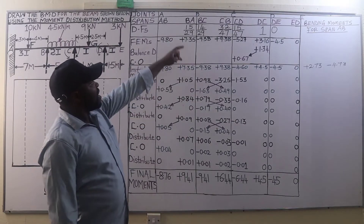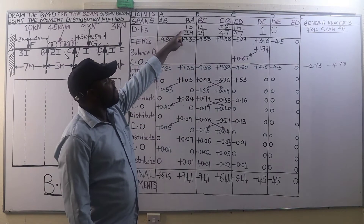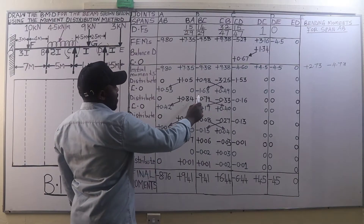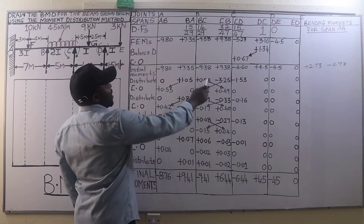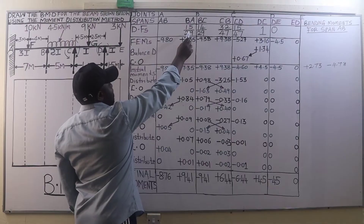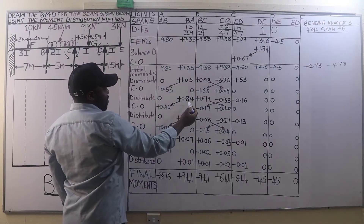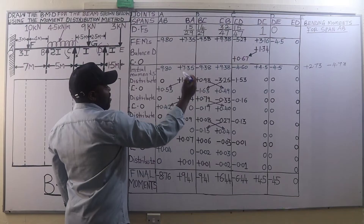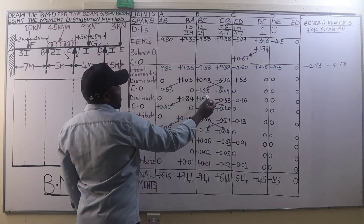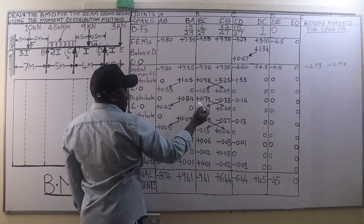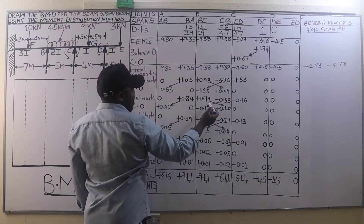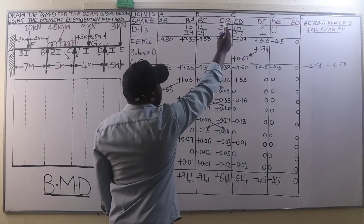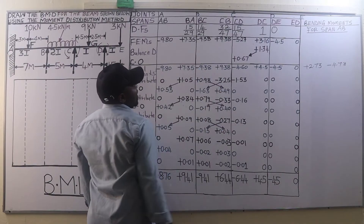We distribute on each member of joint B with the distribution factor. On member BA: 1.63 times 15/29 is 0.84. On member BC: 1.63 times 14/29 is 0.79. Then we come to joint C on member CB.